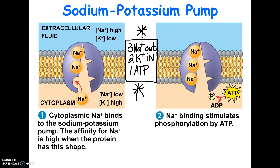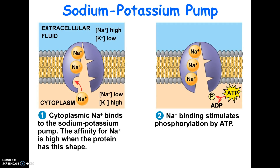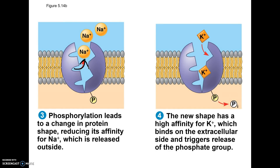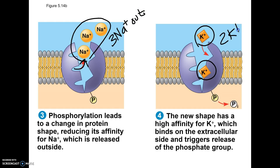They're going to show it in six separate pictures. Step one: three sodiums bind to the protein. Step two: ATP comes in and drops off a phosphate, causing the protein to change shape. Now the protein is not attracted to sodium anymore, so the sodiums leave. Because the sodiums have left, the new protein shape is attracted to potassium. Three sodiums went out; now two potassiums are going to bind.